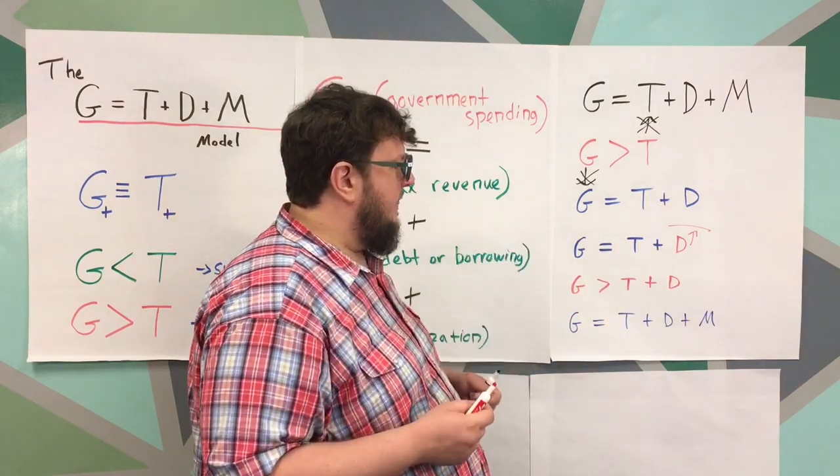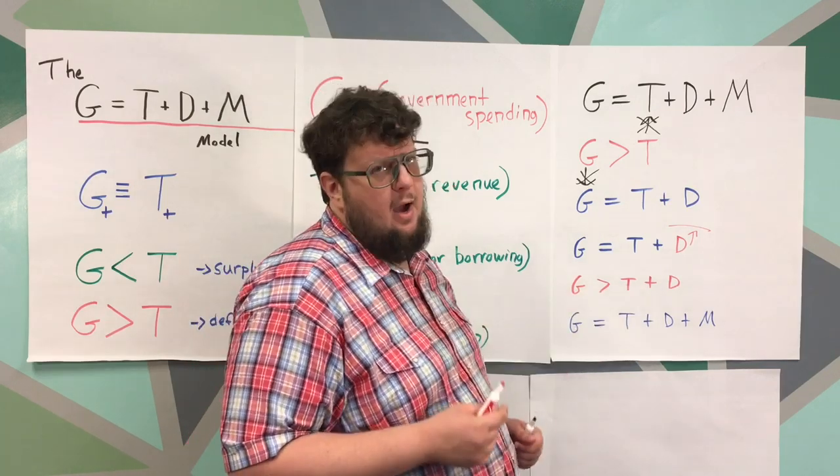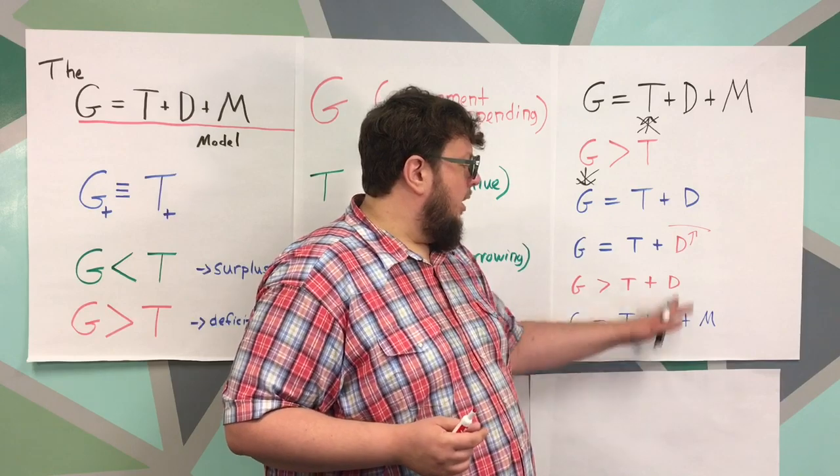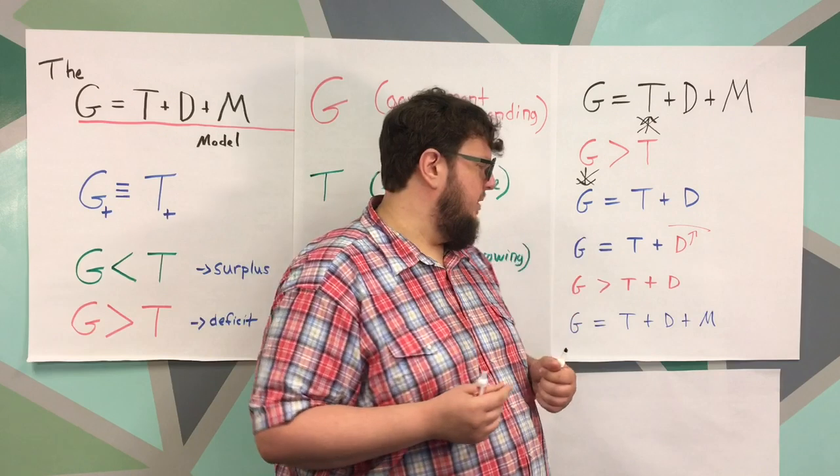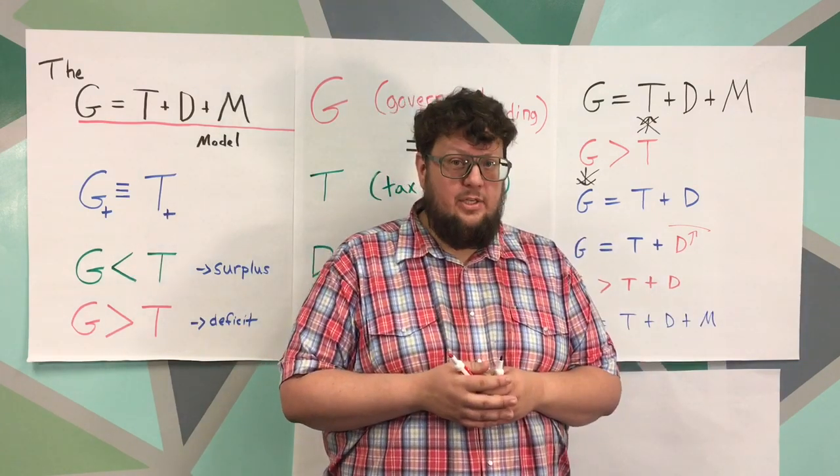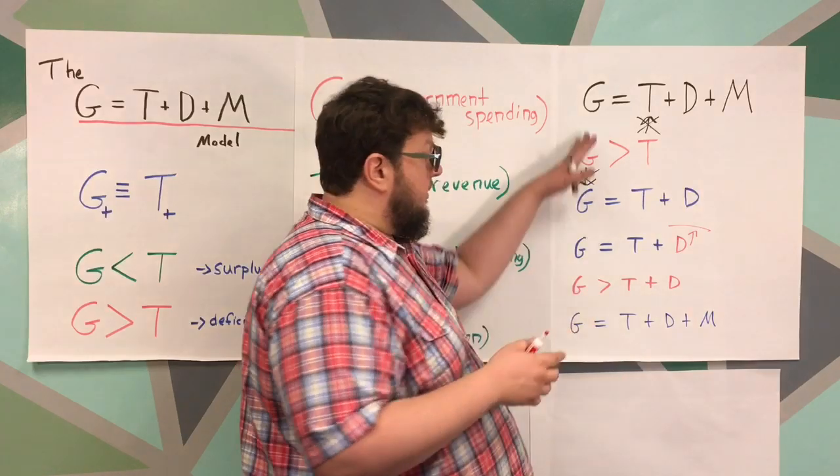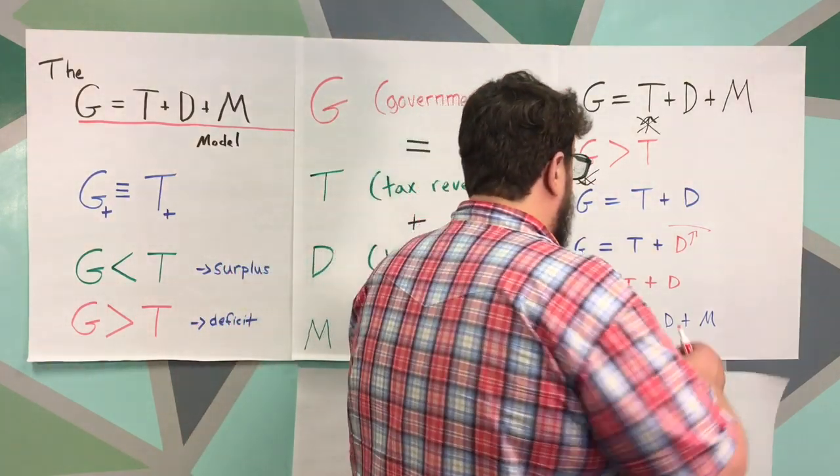Now, when we look at this, there are consequences when you do that. If your taxes are too high, people are unhappy. If your borrowing is too high, it impacts the economy because it crowds out borrowing that private sector could be doing. And if your monetization is too high, it causes inflation. And so this model is very flexible. You can actually use math with it.